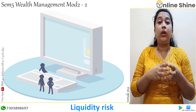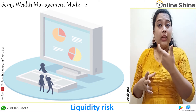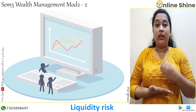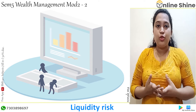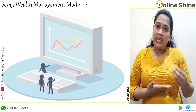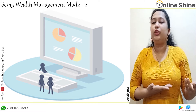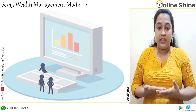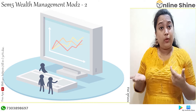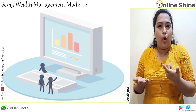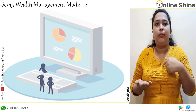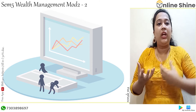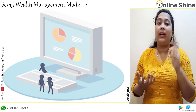The next one is liquidity risk. Liquidity means to convert your assets into cash. For example, I own a house worth 1 crore rupees and I need cash in the short run. So I have to sell it, but there may be no demand — no one is buying it at 1 crore. So I might have to sell that 1 crore property at 80 lakhs, and that 20 lakh difference will be my loss. That risk is known as liquidity risk.